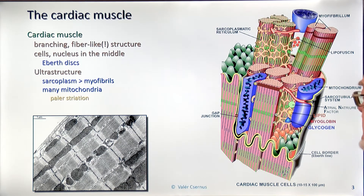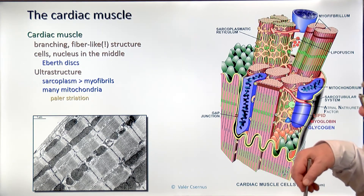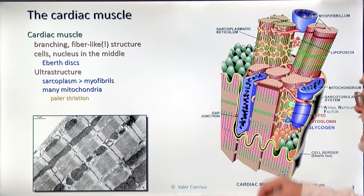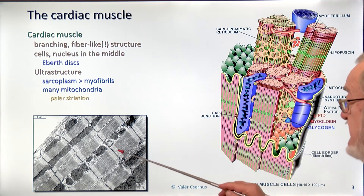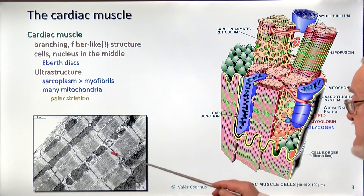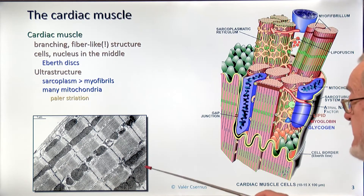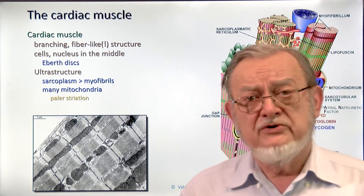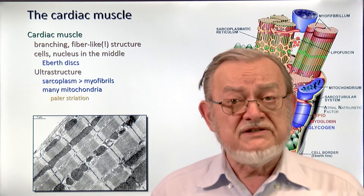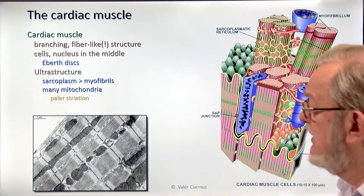Some books say that the paler striation of the cardiac muscle is due to non-synchronized myofibrils — that's not true. You can see in electron microscopic pictures that at the level of the Z membrane they are very nicely synchronized. However, there are large areas which are not striated — the mitochondria — and this is why it washes out and makes the striation paler. The cardiac muscle is so rich with mitochondria that scientists preparing mitochondria for scientific purposes usually do so from cardiac muscle.